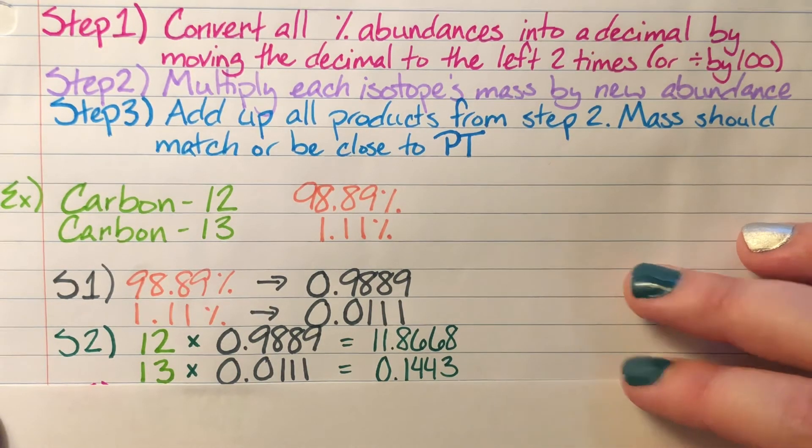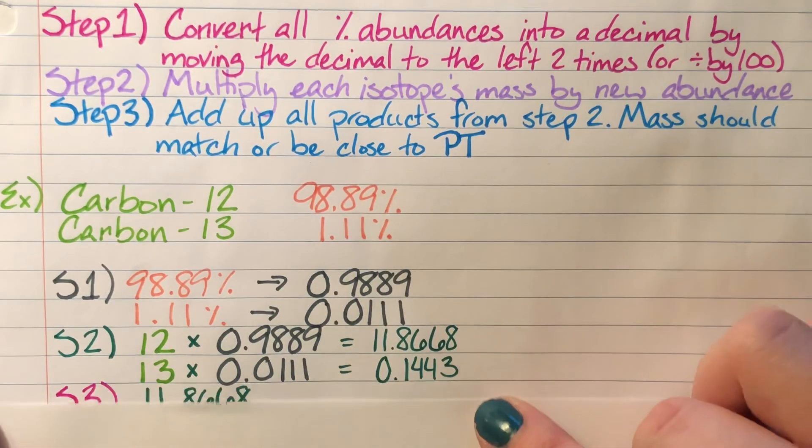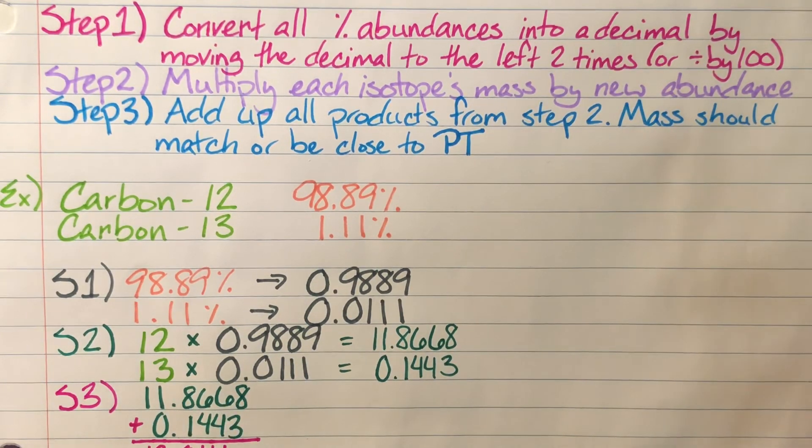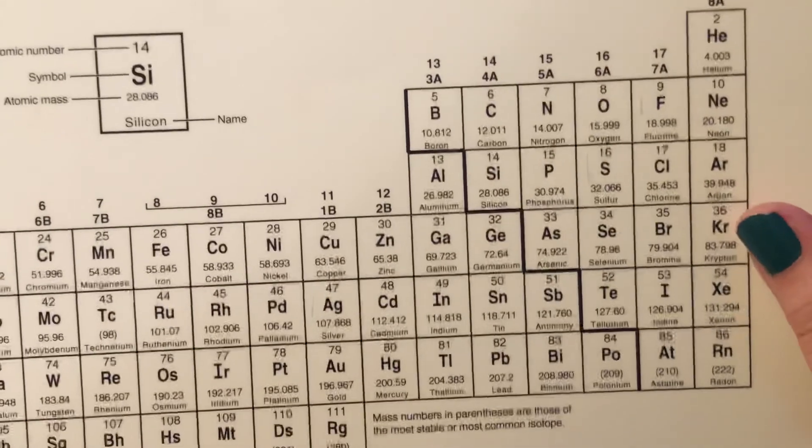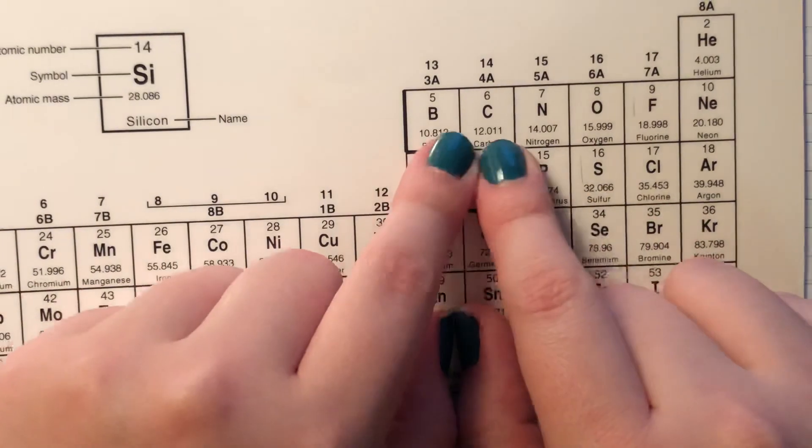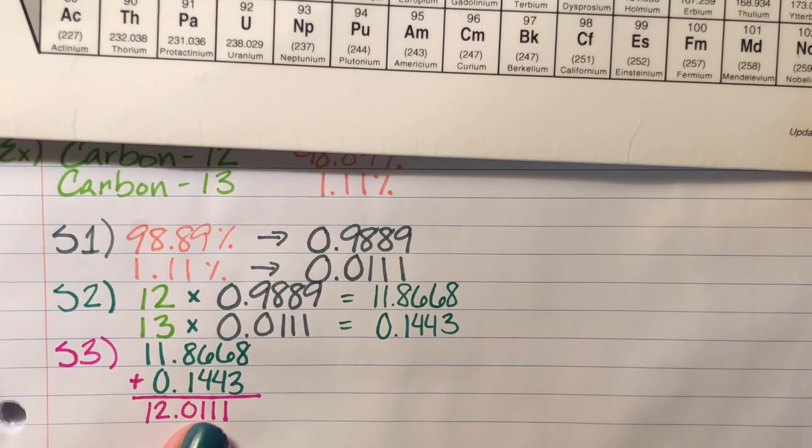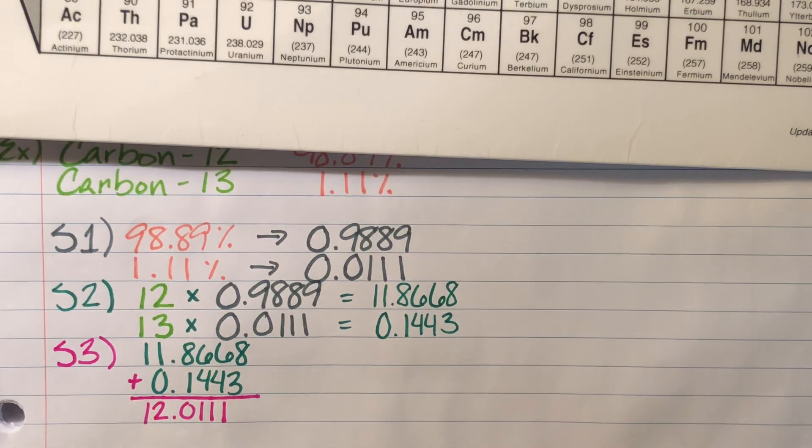Now I'm ready for my third and final step. I'm going to add up these products and see if they match what's on the periodic table. What I got from my math was 12.0111. Looking at my periodic table, I see that the mass of carbon is 12.011. That's close enough to the number I got from my actual practice, so I'm going to say I did this correctly.